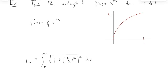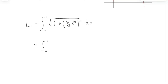Simplify — x to the one-half is inside the square, so x to the half squared is just x, and three-halves squared is nine-fourths. So we have: integral from 0 to 1 of the square root of 1 plus nine-fourths x, dx. How do we do this integral? It's just an ordinary u substitution. Let u equal 1 plus nine-fourths x. Then du is nine-fourths dx, which means dx equals four-ninths du.